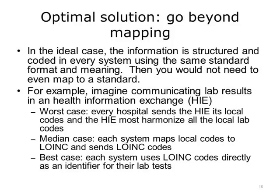In the ideal case, the information is structured and coded in every system using the same standard format and meaning — then you would not need to even map to a standard. For example, imagine communicating lab results in a health information exchange, or HIE. In the worst case, every hospital sends the HIE its local codes and the HIE must harmonize all the local lab codes. In the median case, each system maps local codes to LOINC and sends LOINC codes. But in the best case, each system uses LOINC codes directly as an identifier for their lab tests. The best case is not always possible, since it needs to be implemented when systems are first designed.